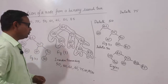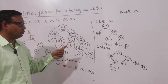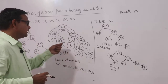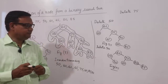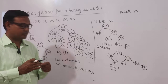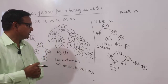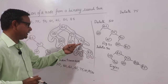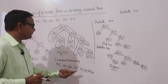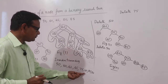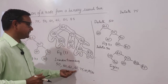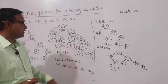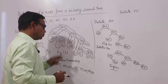So if I delete a node having both left and right children, that node will be replaced by its in-order successor or in-order predecessor. For 75, the in-order successor is 80 and the in-order predecessor is 65. So I can replace 75 by either 80 or 65. I can show both cases.